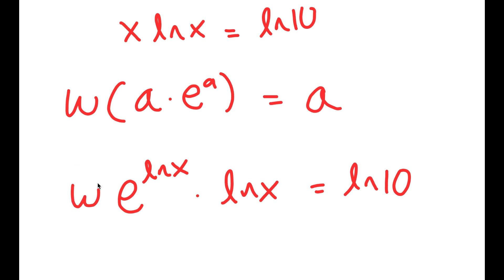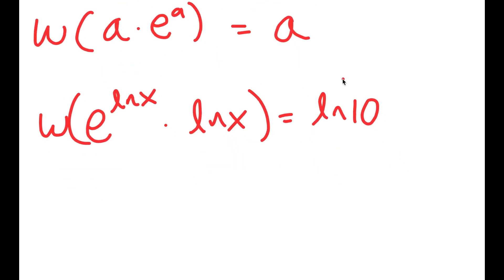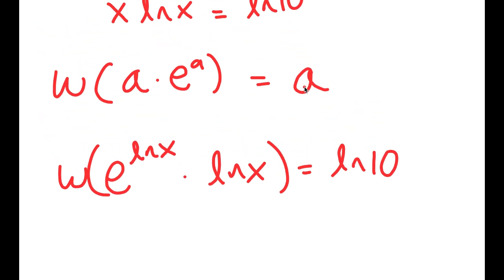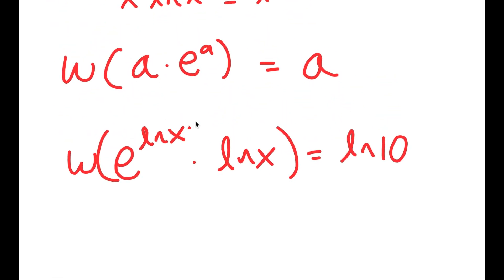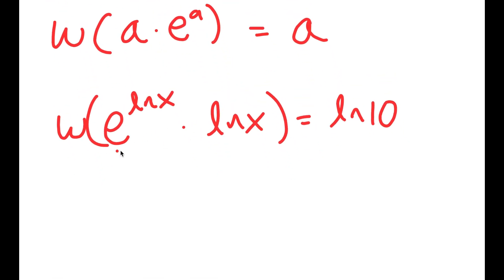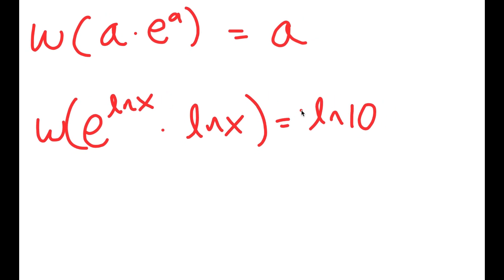And now we can use this because we can think of a as ln x. So I have a, which is ln x times e to the power of a, or e to the power of ln x. So now this means that this is simply just equal to a. But also what I do on one side, I have to do on the other side. So I also have to take the W of ln 10.